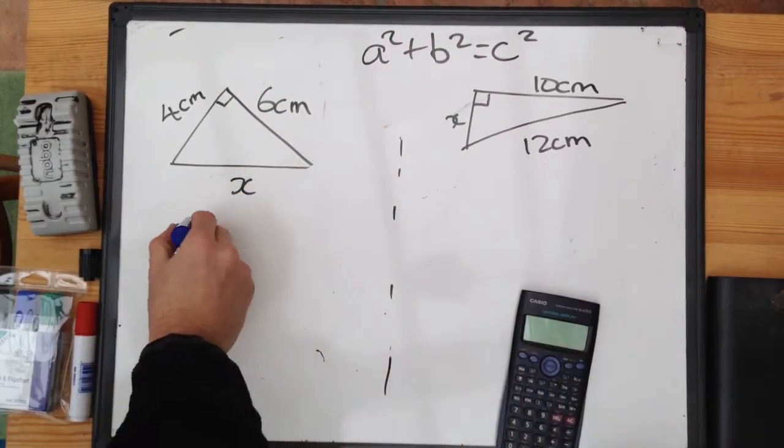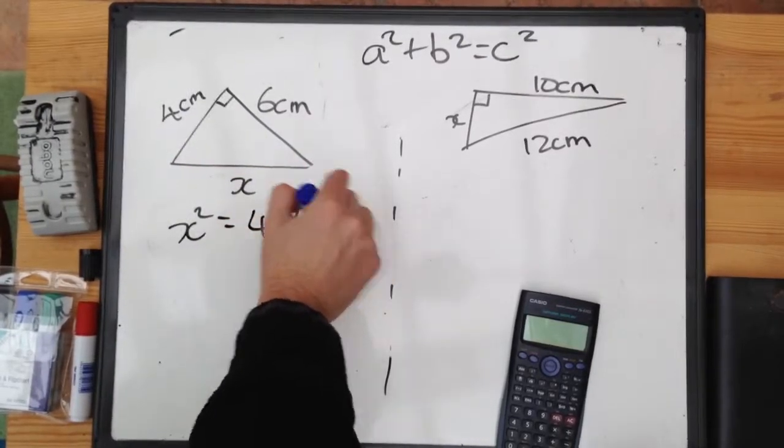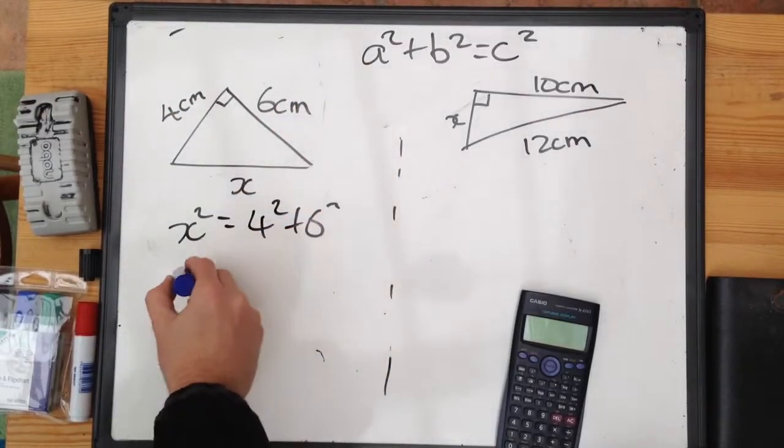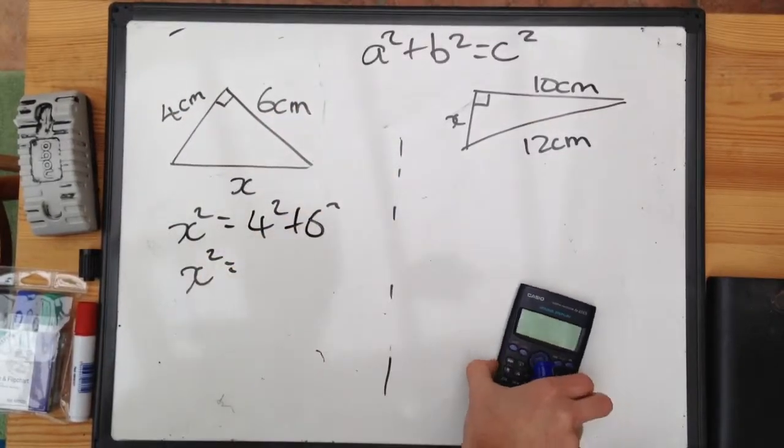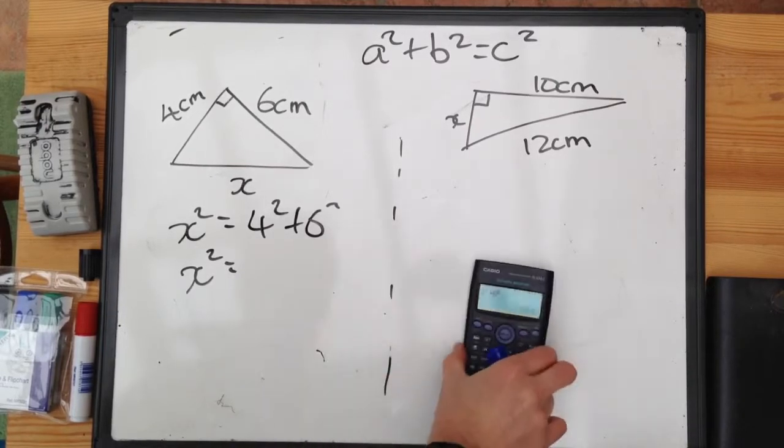we simply have that X squared is equal to 4 squared plus 6 squared. So the square on the long side is equal to the sum of the squares on the two short sides. Stick that into your calculator. Gives you 4 squared plus 6 squared equals 52.